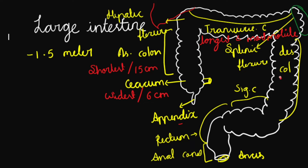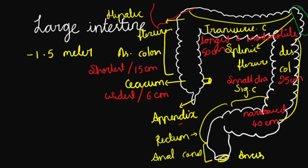The transverse colon is 50 cm long. Then comes the descending colon at 25 cm. Then comes the sigmoid colon, which has the smallest diameter — it is the narrowest part — and its length is 40 cm. Then comes the rectum, which is around 12 to 15 cm. And finally the anal canal, which is 3.8 cm.